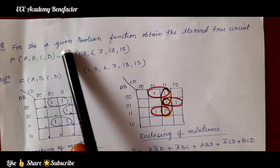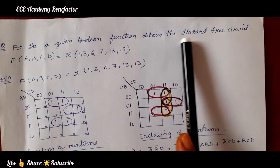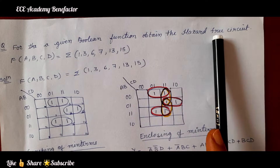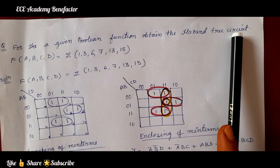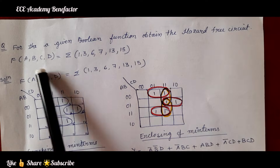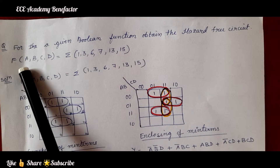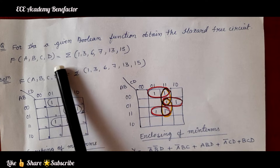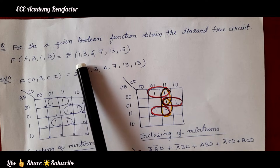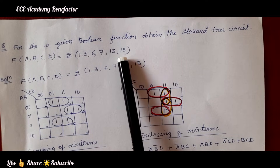For a given Boolean function, obtain the hazard free circuit. The Boolean function given is F(A,B,C,D) = summation of minterms 1, 3, 6, 7, 13, 15.